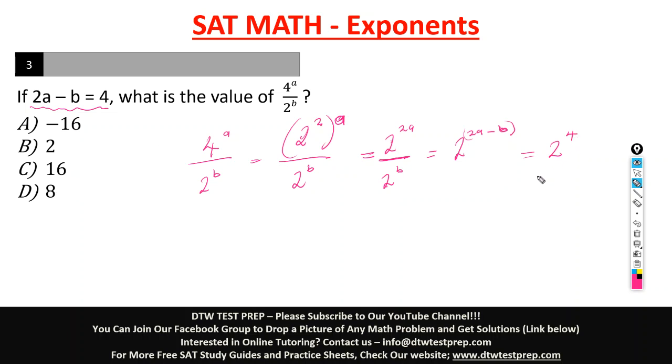So what is 2 raised to the power 4? That is 2 times 2 times 2 times 2. And what would that give us? 2 times 2 is 4. 4 times 2 is 8. 8 times 2 is 16. So our answer here is 16. And what is the right option? Our right option is option C. Do you see that?